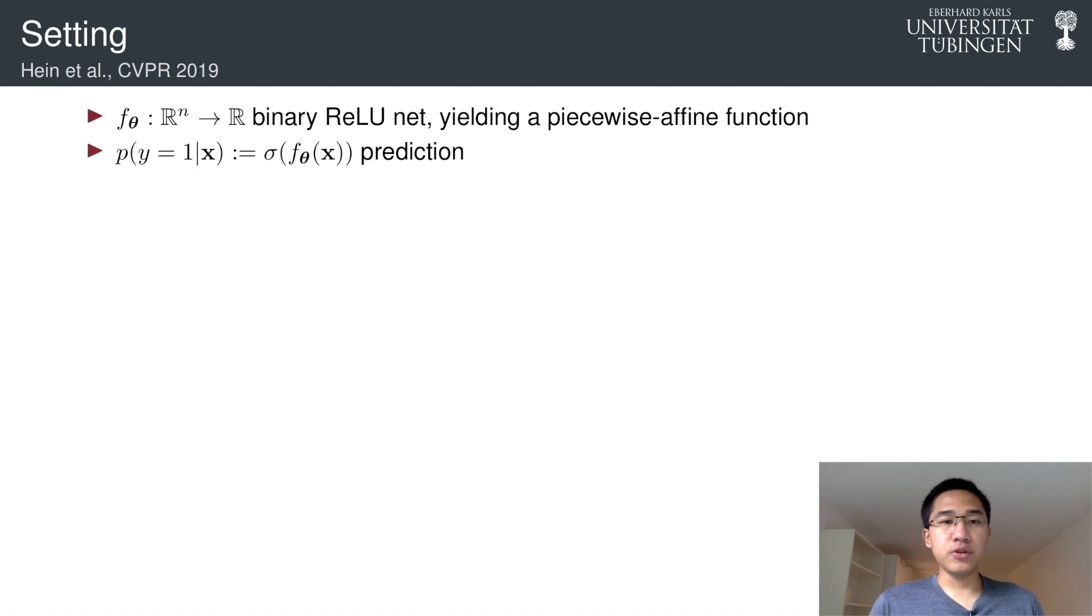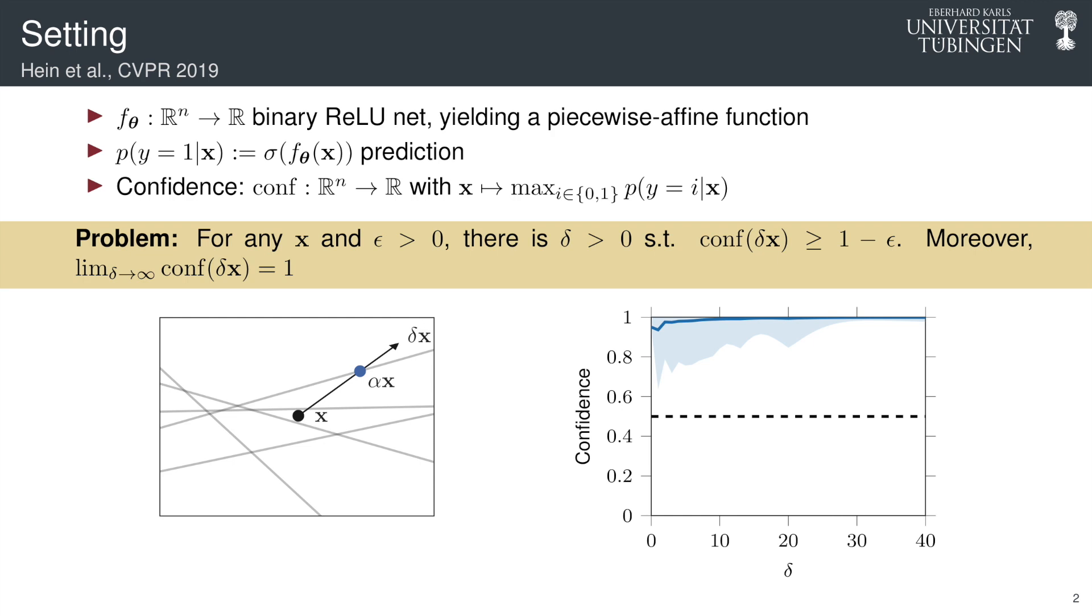Now, the usual way to get a probability estimate over the prediction is by applying logistic sigmoid function on top of the output of the network. Because of that, we have a notion of confidence, which is just the maximum predictive probability over the label for any input X.